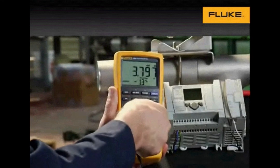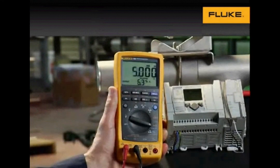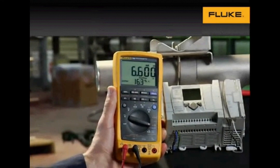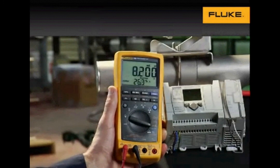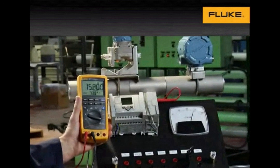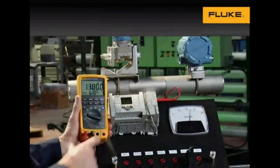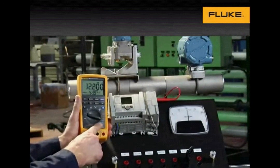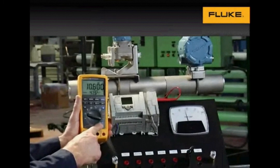The 789 also has a ramping function that allows you to ramp the milliamp signal into the indicator or other input device at one location and go to the device and check for an appropriate response, such as a valve stem indicator change or mode indicator of a control system.